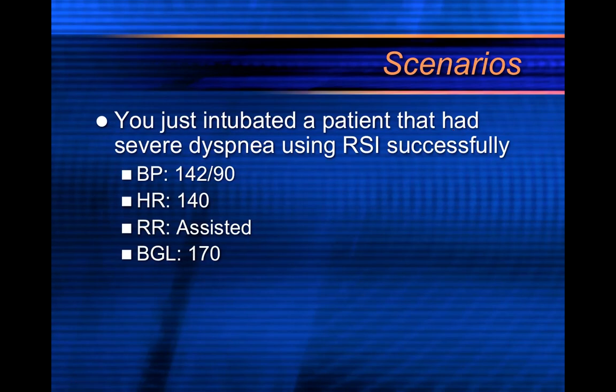Scenario one: you've just intubated a patient with severe dyspnea using RSI successfully. They have a blood pressure of 142/90, a heart rate of 140, and the respiratory rate is assisted — let's say you have them at 14 breaths per minute, within normal range. Their blood glucose is 170.